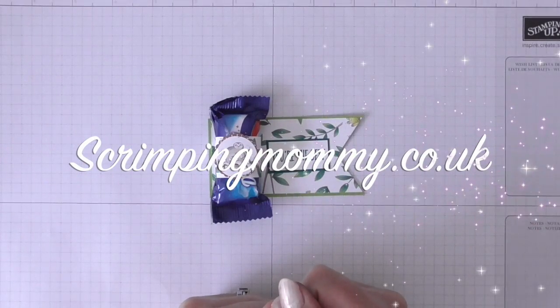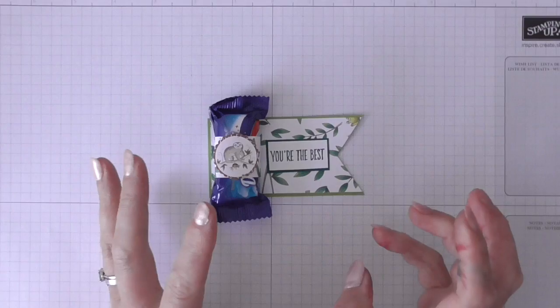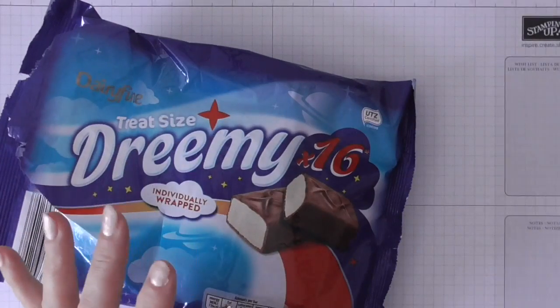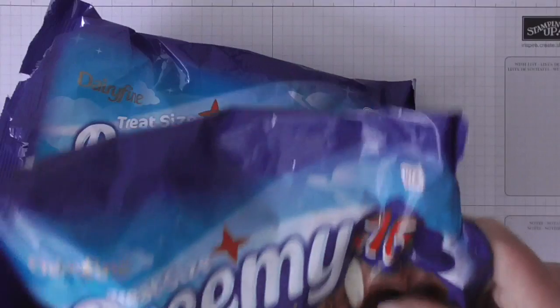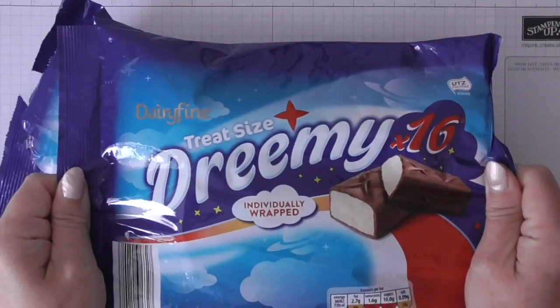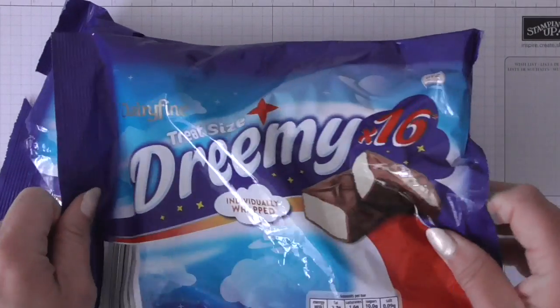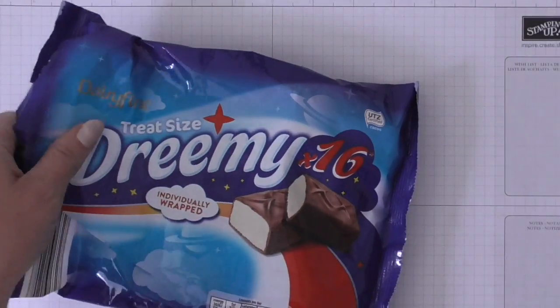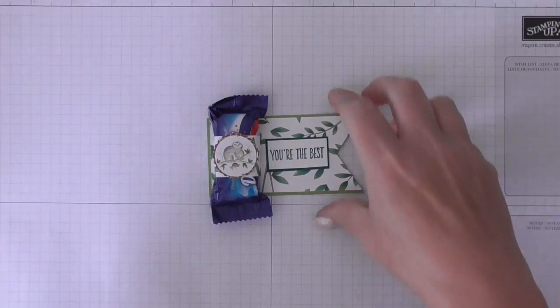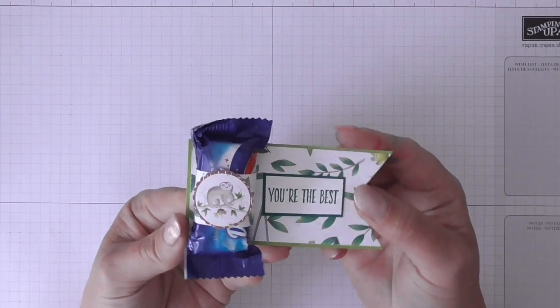Hello everybody, it's Amanda from ScreamPainMama.co.uk. This week I'm on sweet treat mode. I've got to make tons of them, so I've bought these cheap sweets from Aldi. They are knock-offs of Milky Ways, but you can use any sweet treat and adjust the sizes. I'm just going to show you how I've made this and the lovely products I've used. Super simple and fun.